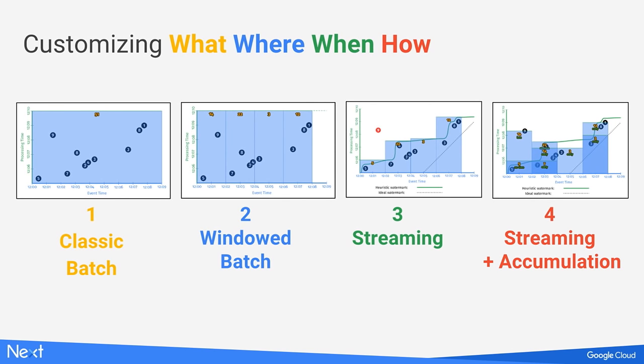What I want you to take away is that we had an algorithm — here just integer summation — with a lot of flexibility in how we ran it. The same holds for much more complex user logic. You take that logic and tweak just a couple of other lines to answer those other three questions. This gives you the ability to cover the spectrum from simple traditional batch to complex streaming use cases, all in a single framework.